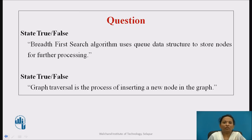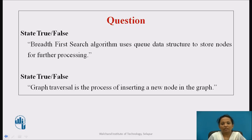Here is a time to reflect on the content we have learnt. State whether the following statements are true or false. Statement one: Breadth-first search algorithm uses a queue data structure to store nodes for further processing. Statement two: Graph traversal is the process of inserting a new node in the graph. The first statement is true. The second statement is false because graph traversal is the process of visiting each node in the graph, not inserting a node.